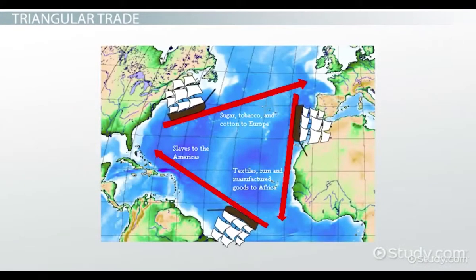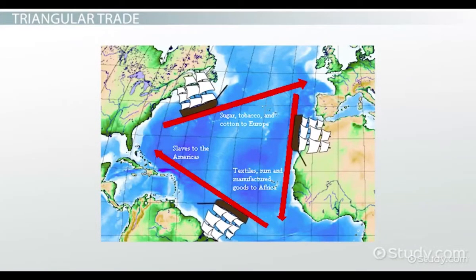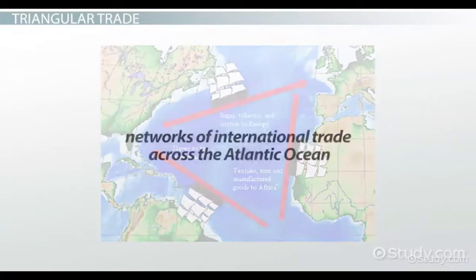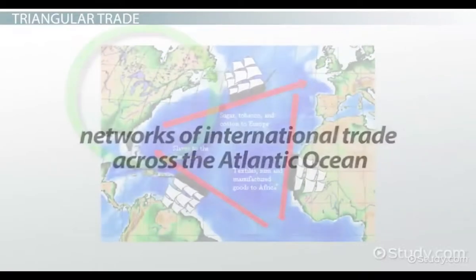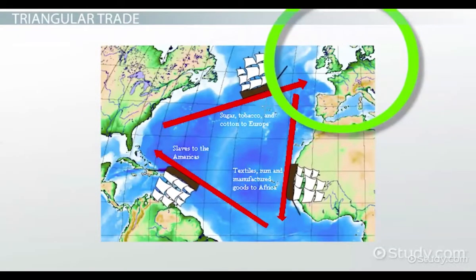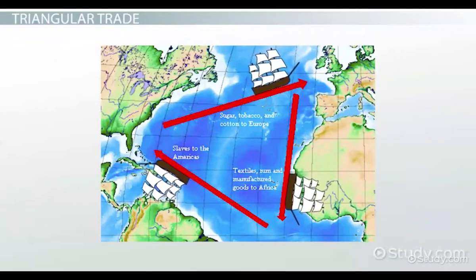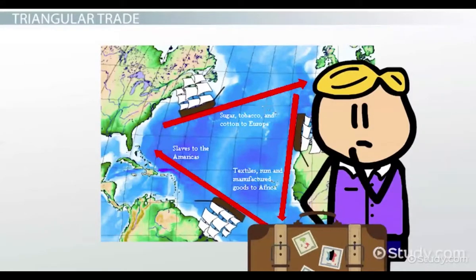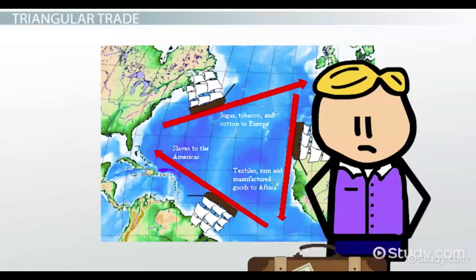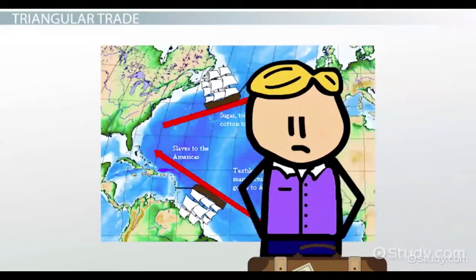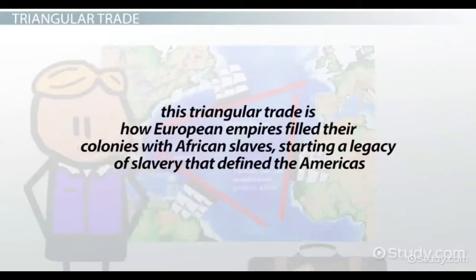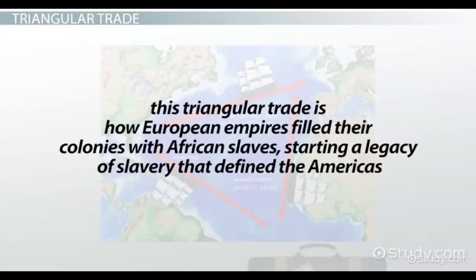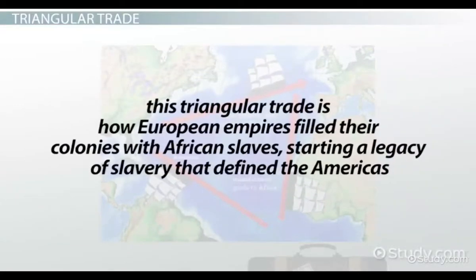Historically, this system became very important on an international scale way back in the 16th century, when European empires created networks of international trade across the Atlantic Ocean between the Americas, Europe, and Africa. It was this transatlantic triangular trade of the 16th century that was responsible for moving ideas, products, and people around the world. This triangular trade is how European empires filled their colonies with African slaves, starting a legacy of slavery that defined the Americas.